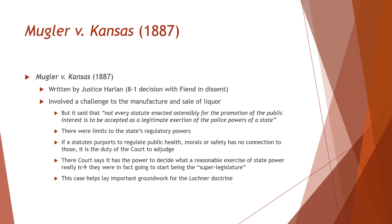Muggler v. Kansas was an 8-1 decision with Justice Field dissenting. It involved a challenge to the manufacture and sale of liquor in Kansas. The court said not every statute enacted ostensibly for the promotion of public interests is to be accepted as a legitimate exertion of police powers of the state. There were limits to states' regulatory powers. If a statute purports to regulate public health, morals, and safety but has no connection to those, the court can adjudge. The court is going to start to be kind of a super legislature.